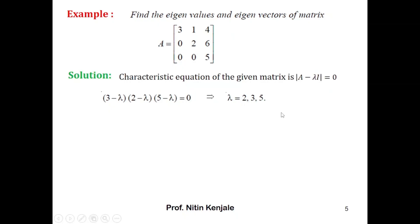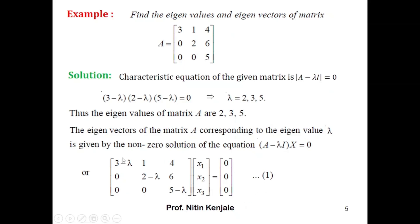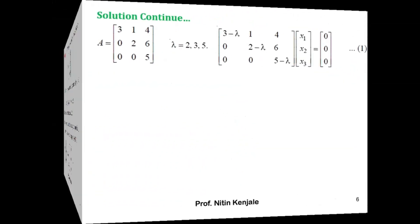Now we will find the corresponding eigenvectors. To find the eigenvector associated with eigenvalue λ, we solve the equation (A − λI)x = 0. Substituting for A and I, we get a system of linear equations in x1, x2, and x3. I label this as equation number 1.